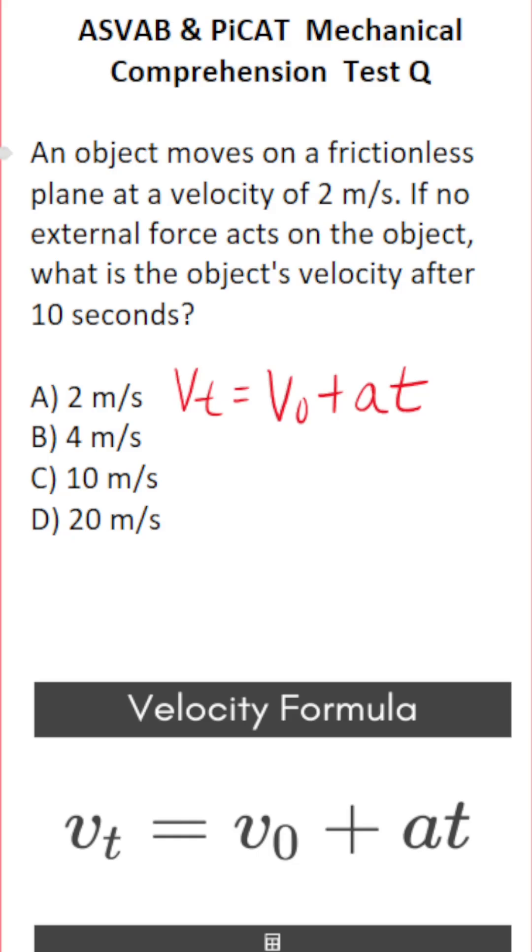Well, let's look what we have in this formula. We know our initial velocity V0 is two meters a second. There's no external force acting upon this object. So that means our acceleration in the velocity formula is zero, and we know time is 10 seconds.